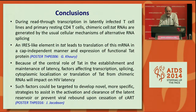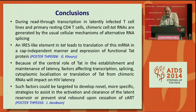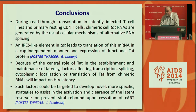To conclude the work we have done so far: during read-through transcription in latently infected T cells and primary resting CD4 cells, we can find chimeric messages, some of which contain cellular-TAT material as a chimeric message, and these appear to be generated by the usual cellular mechanisms of alternative RNA splicing. We've shown that an IRES-like element in the TAT can lead to translation of these mRNAs in a CAP-independent manner and expression of functional TAT protein. I draw your attention to a poster being presented by George Currie in our lab on Thursday, where he's characterising this IRES element and looking for RNA-binding proteins that might be interacting with it.